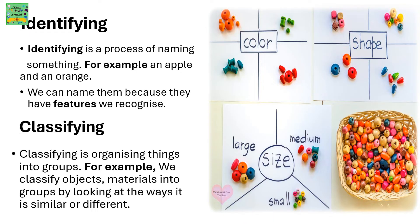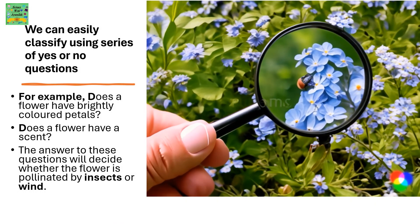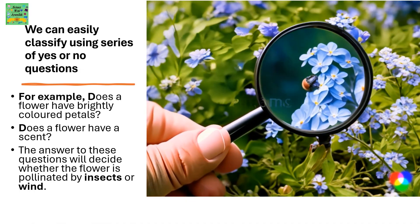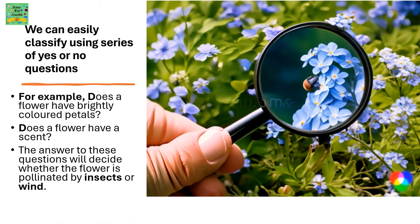Classifying. Classifying is organizing things into groups. For example, we classify objects and materials into groups by looking at the ways they are similar or different. We can easily classify using a series of yes or no questions. For example, does a flower have brightly colored petals? Does a flower have a scent? The answers to these questions will decide whether the flower is pollinated by insects or wind.